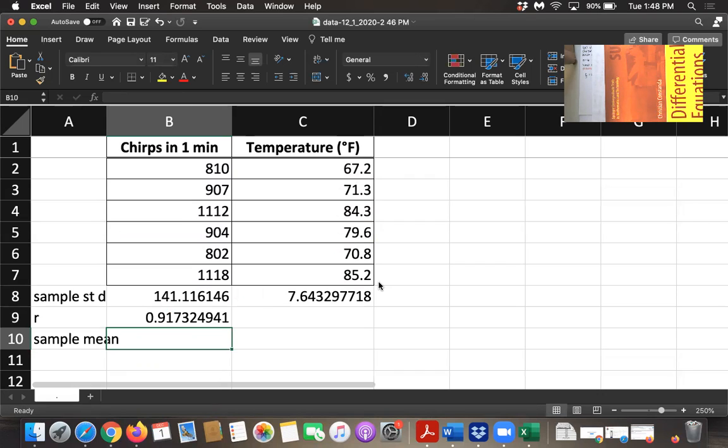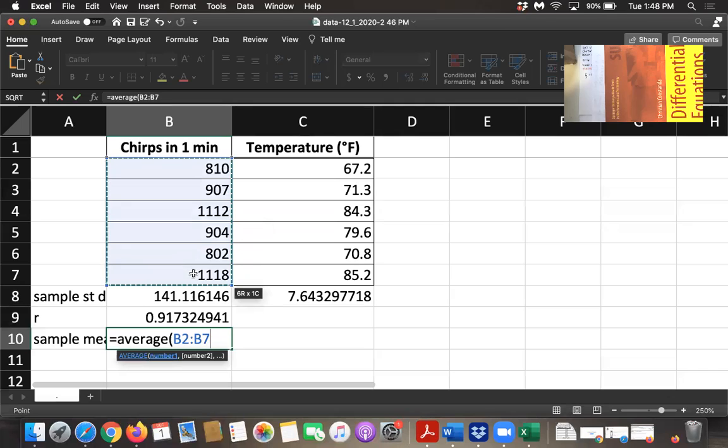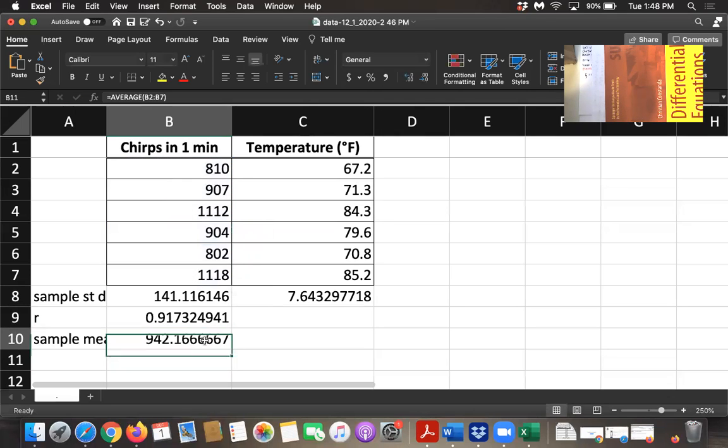And then we need the sample means for both the x values and the y values. The built-in function for that is average. So we'll type equals average, open parentheses, and then we'll select the x values, and then drag and drop.